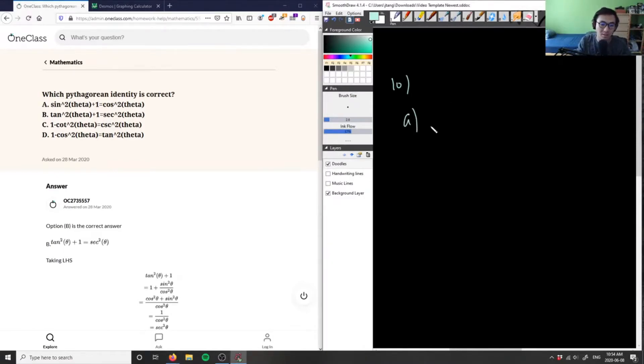Let me just verify option B here to make sure this solution is correct. B states that tan²θ + 1 = sec²θ.